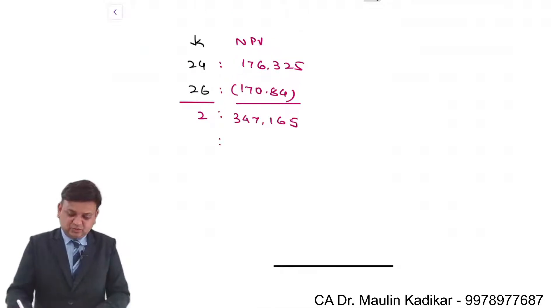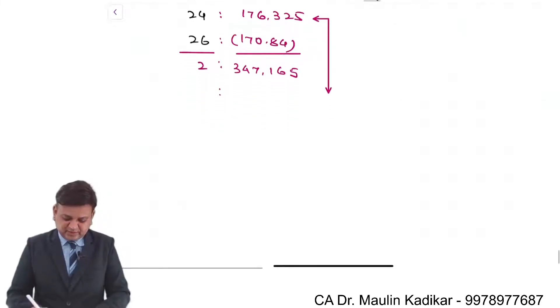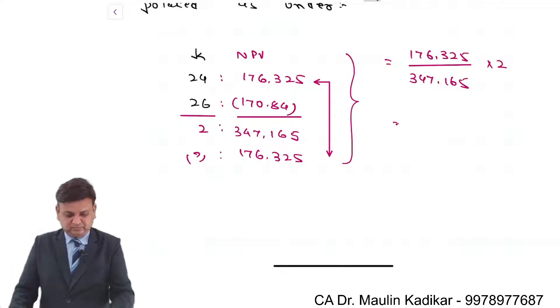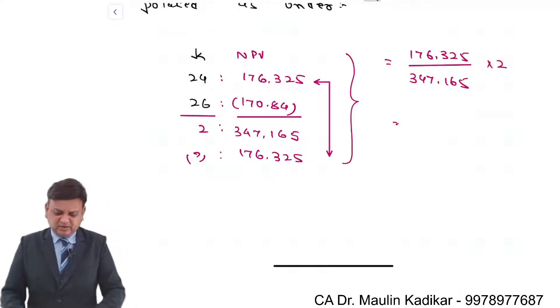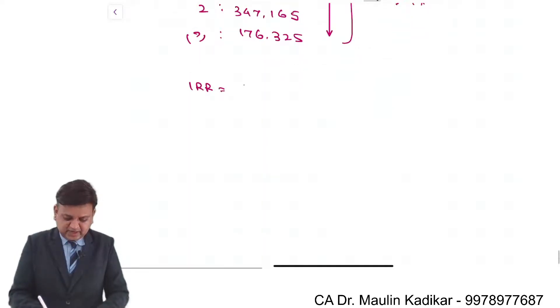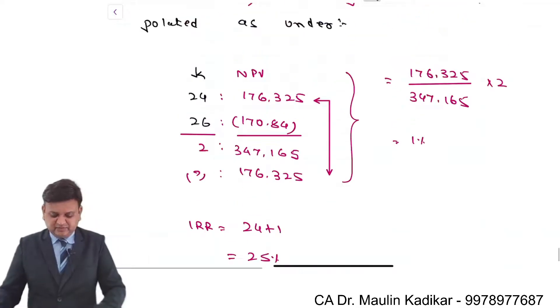Now, usually we will take the lower cost of capital as base. So over here I am taking this as base, 24%. So 176.325 divided by 347.165 into 2 percentage. That comes to 1.01, but we can say that it is very near to 1 percentage. So IRR is 24 plus 1, that is 25 percentage.